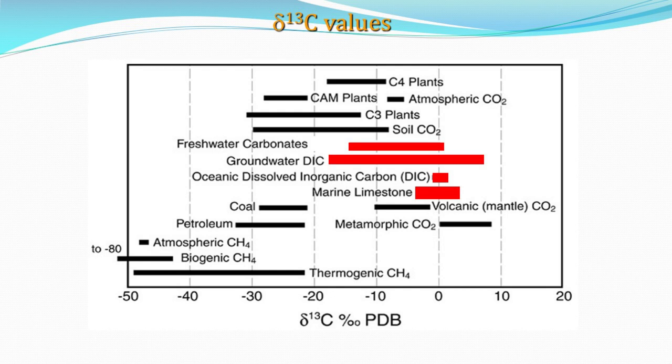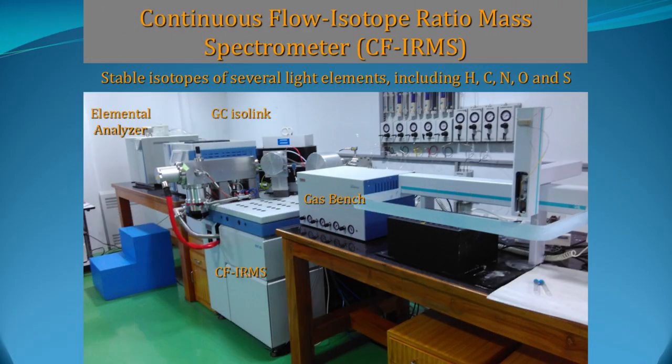In this series we use isotope ratio mass spectrometer. Here I am showing you the isotope ratio mass spectrometer at the center of the photograph. With the help of this mass spectrometer we can measure isotopes of hydrogen, carbon, nitrogen, oxygen, and sulfur in various kinds of natural materials.